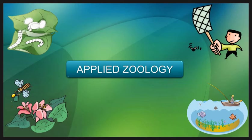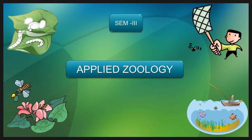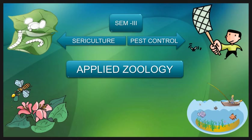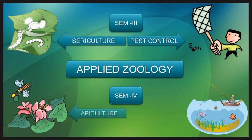There are many branches in Applied Zoology such as beekeeping, sericulture, fishery, poultry, goat farming, animal husbandry, lac culture, and the pearl industry. In Semester 3, we will study Applied Zoology First, which includes two units: sericulture and pest control practices. In Semester 4, we will study Applied Zoology Second, which includes two units: apiculture (that is beekeeping) and fishery.